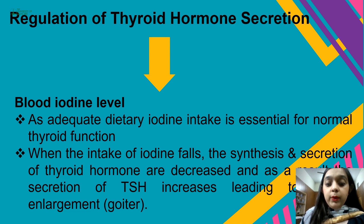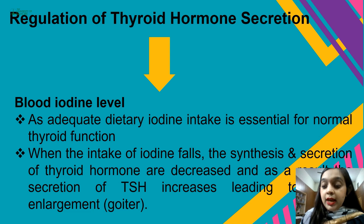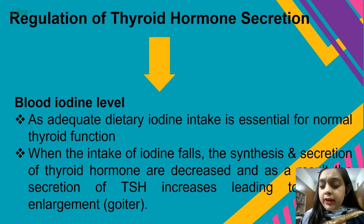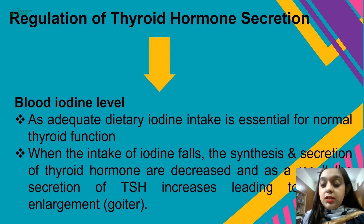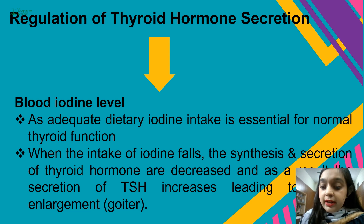Adequate dietary iodine intake is essential for normal thyroid function. The two major constituents for thyroid hormone production are the amino acid tyrosine and the micromineral iodine. Iodine is required in very small amounts for the body to maintain normal function. According to the World Health Organization, the recommended dietary allowance (RDA) for iodine is 150 micrograms per day. The major food sources of iodine are iodized salt, seafood, seaweed, eggs, and other ingredients.